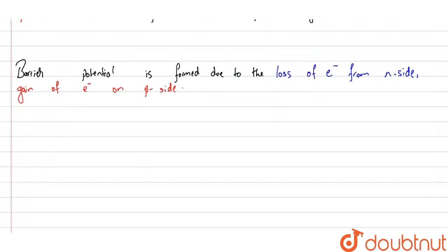With this, we can conclude our answer. Therefore, diffusion and drift are the processes that take place in the formation of p-n junction. Thank you.